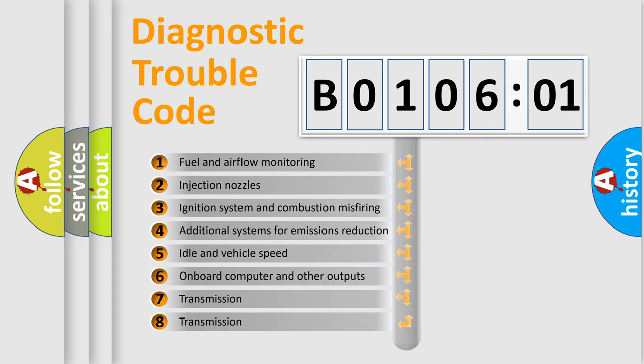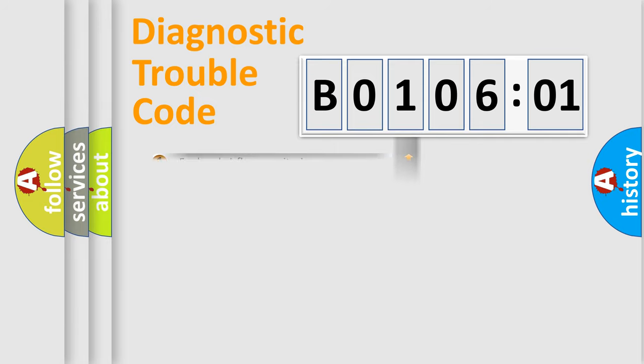The third character specifies a subset of errors. The distribution shown is valid only for the standardized DTC code.